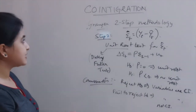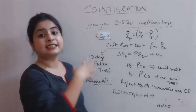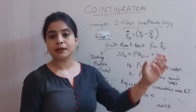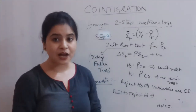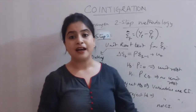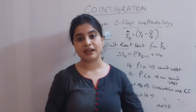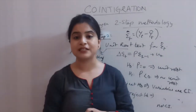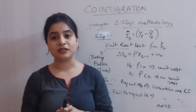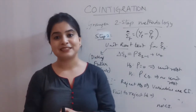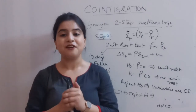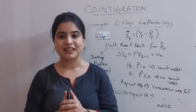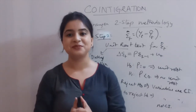This is the Granger two-step methodology for testing the presence of co-integration. I hope you have understood the concepts discussed in this video. If you have any problems related to co-integration or any other sub-parts of econometrics, please let us know in the comment section below. For more updates, please stay tuned to Economicspedia. Thank you for watching and see you in the next one.